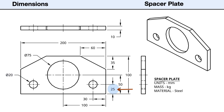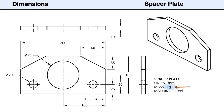The hole location is 25 millimeters above the bottom edge and 30 millimeters from the outside edge. The chamfer on the top corner starts 60 millimeters from the outside edge and ends 35 millimeters below the top edge. It is noted that the material is steel and the mass units are set to kilograms.